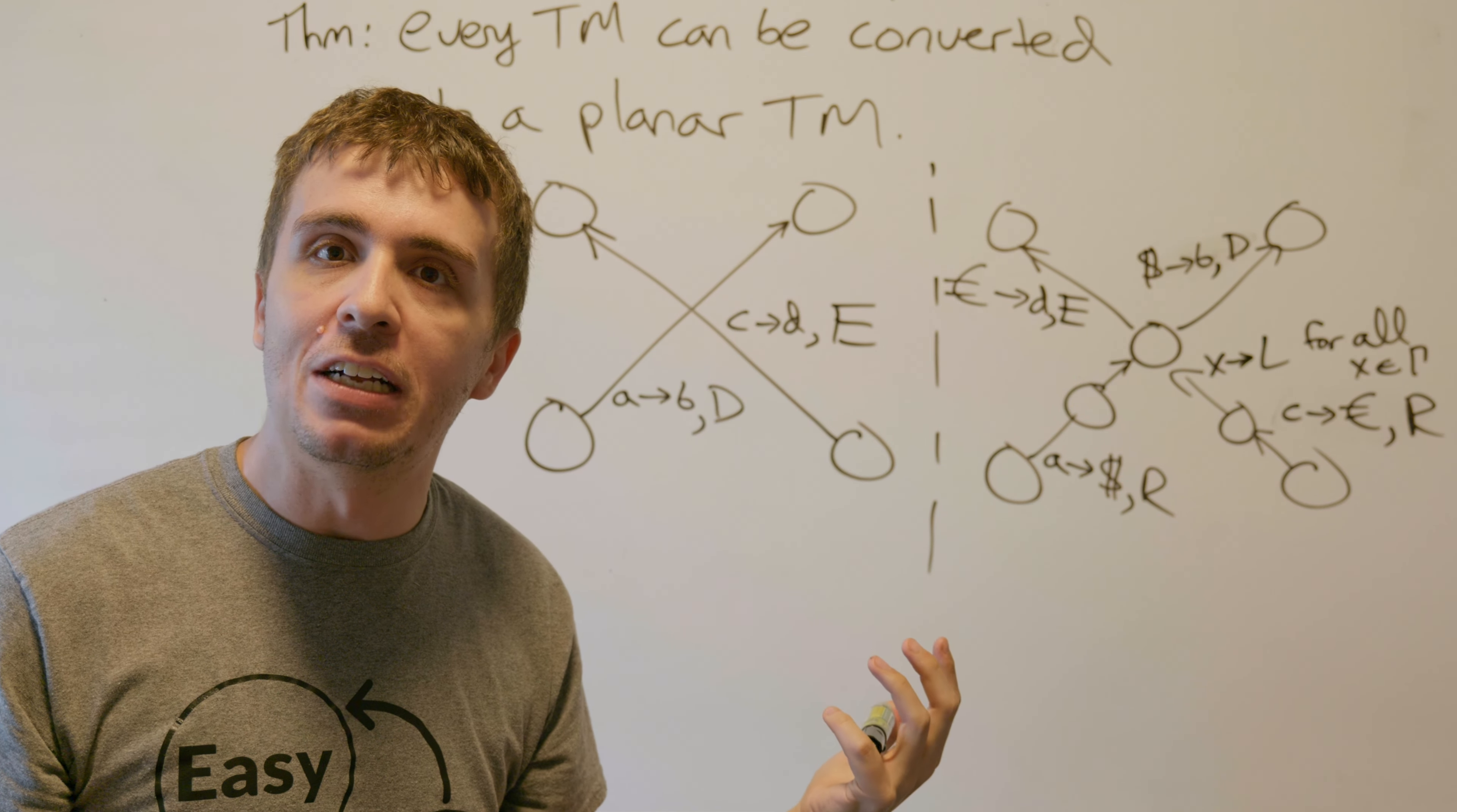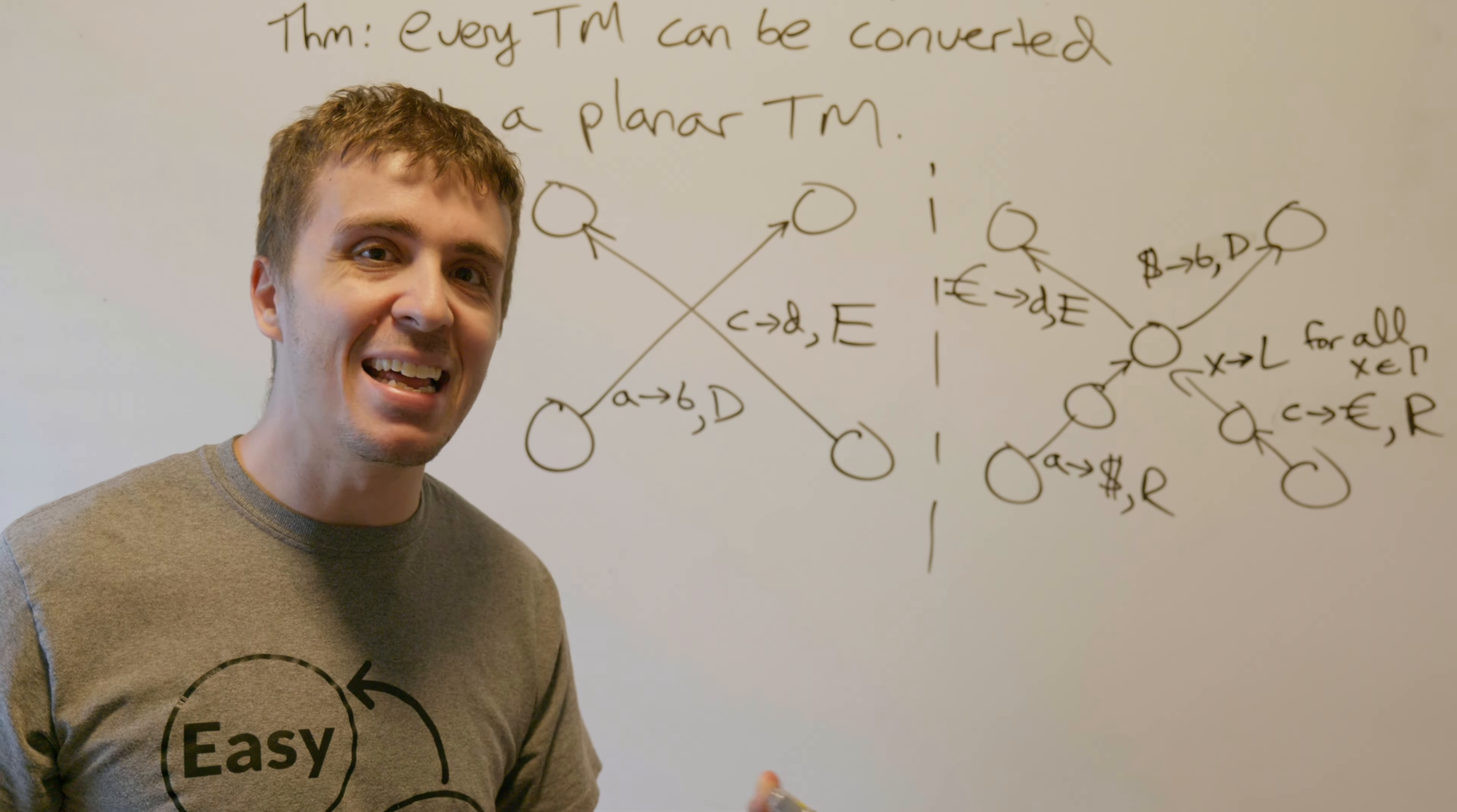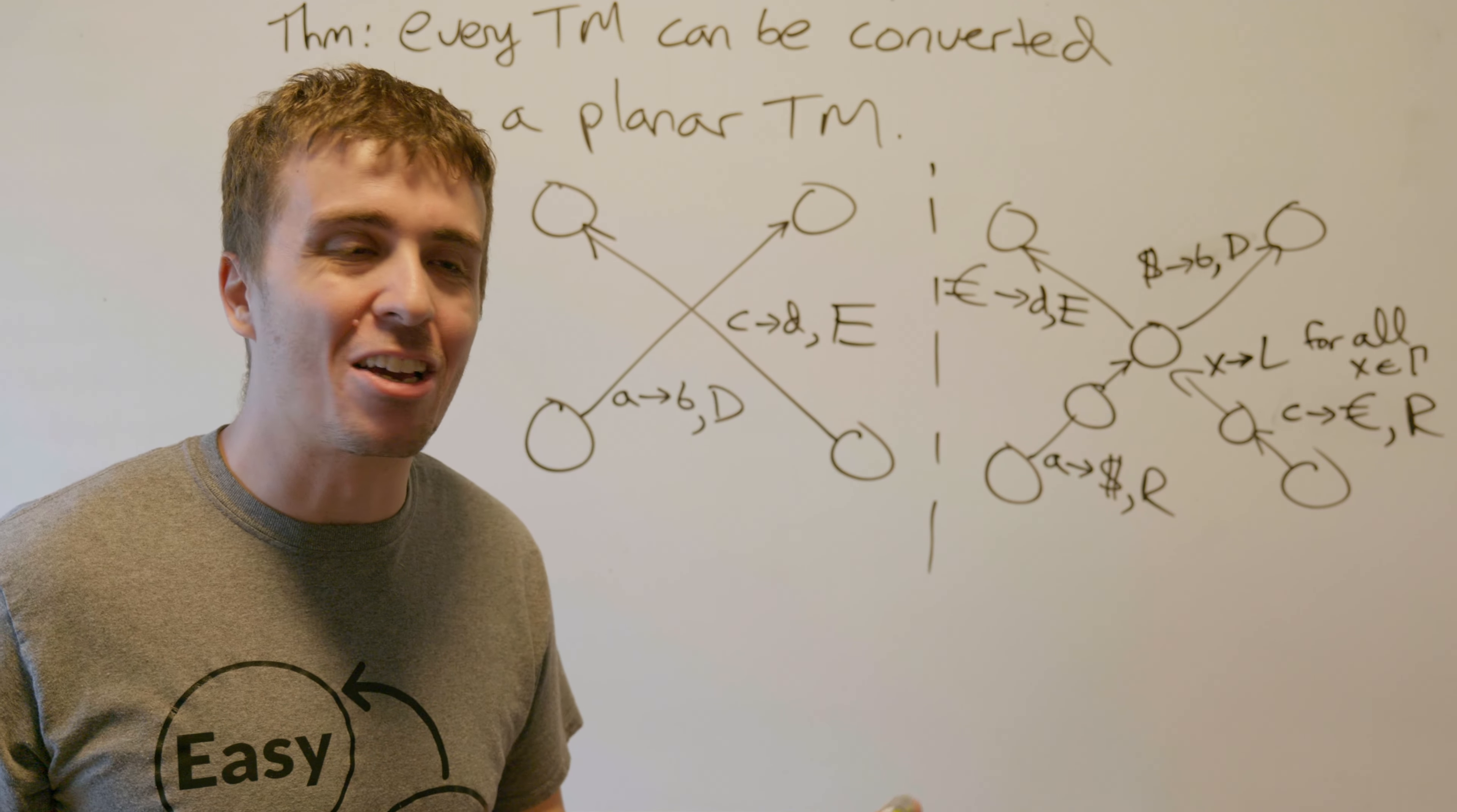Since there are only a finite number of edge crossings, no matter what Turing machine you got, you can always make it planar. Isn't that pretty cool?